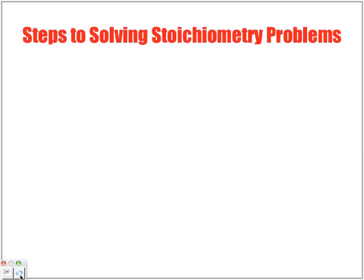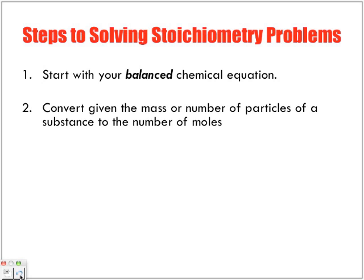Steps to solving stoichiometry problems are as follows: start with your balanced chemical equation. Next, convert the given mass or the number of particles of a substance to the number of moles. Remember that relationship of molar mass, mass, and number of moles is very important in stoichiometry.